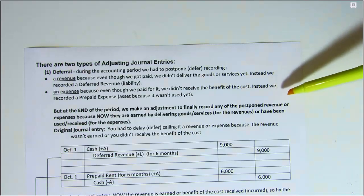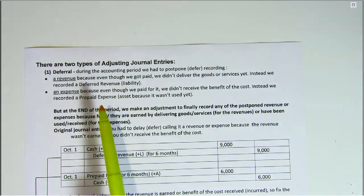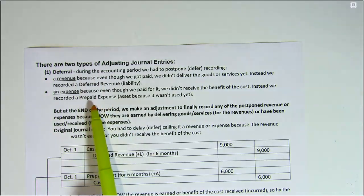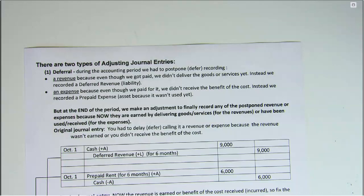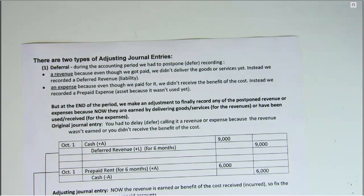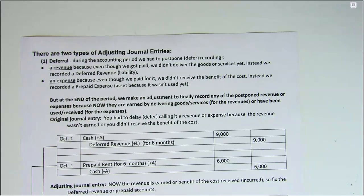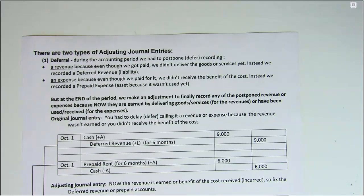So instead we record an asset — a prepaid expense. And supplies, by the way, is an example of a prepaid expense. So let's take a look at those initial journal entries where we had to delay recording a revenue and expense.